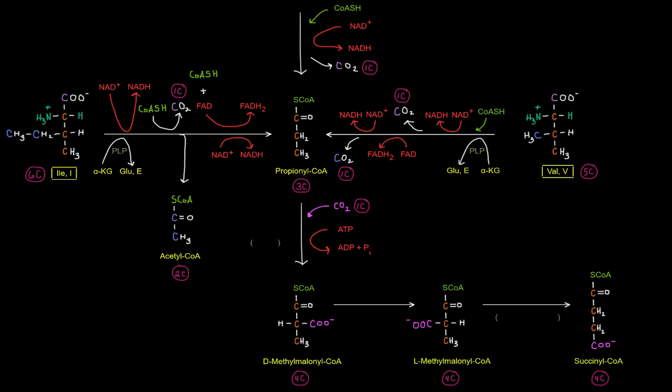Now, we can also get this propanyl CoA from valine. We're going to remove the amino group just like we did over here with the isoleucine and transamination reaction. Okay. And this carbon up here in the carboxyl group is going to leave as a carbon dioxide. And this carbon right here is going to leave as a carbon dioxide as well.